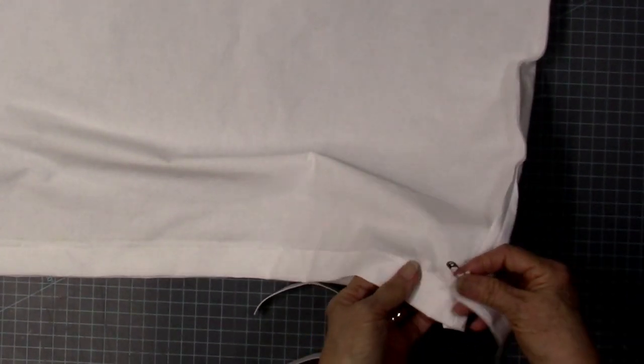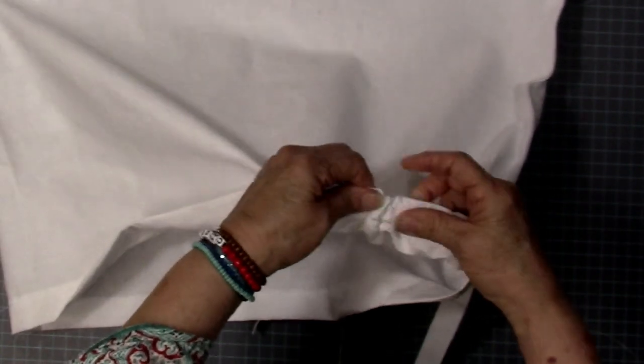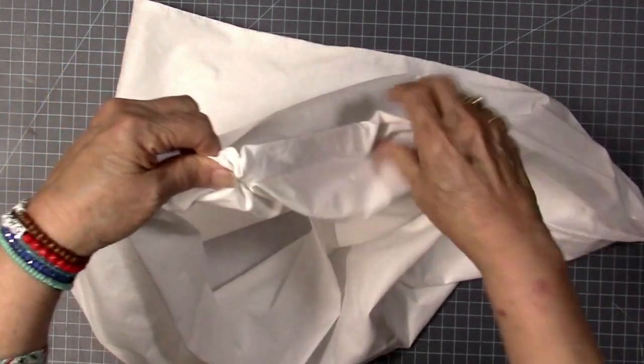All right. Here's my opening for my elastic. I'm going to take a safety pin and put it through the end of the elastic, and then just thread this through, keeping that elastic straight and flat. Now, if it folds on you for a minute, that's okay because then you can actually just kind of work it around to flatten it back out.